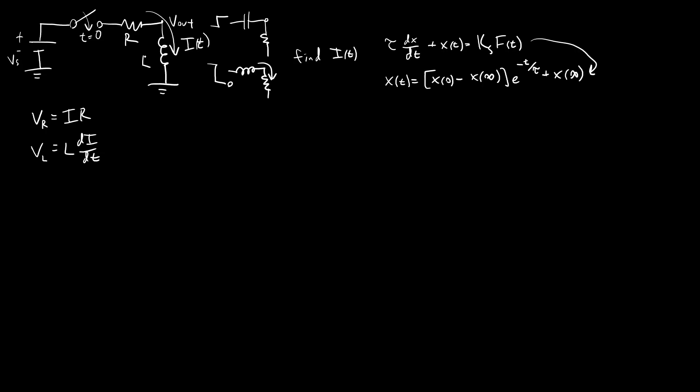When analyzing a circuit like this, we can also use Kirchhoff's voltage law and Kirchhoff's current law. In this case, we know the two elements are in series, so the current through them has to be the same. So IR equals IL.